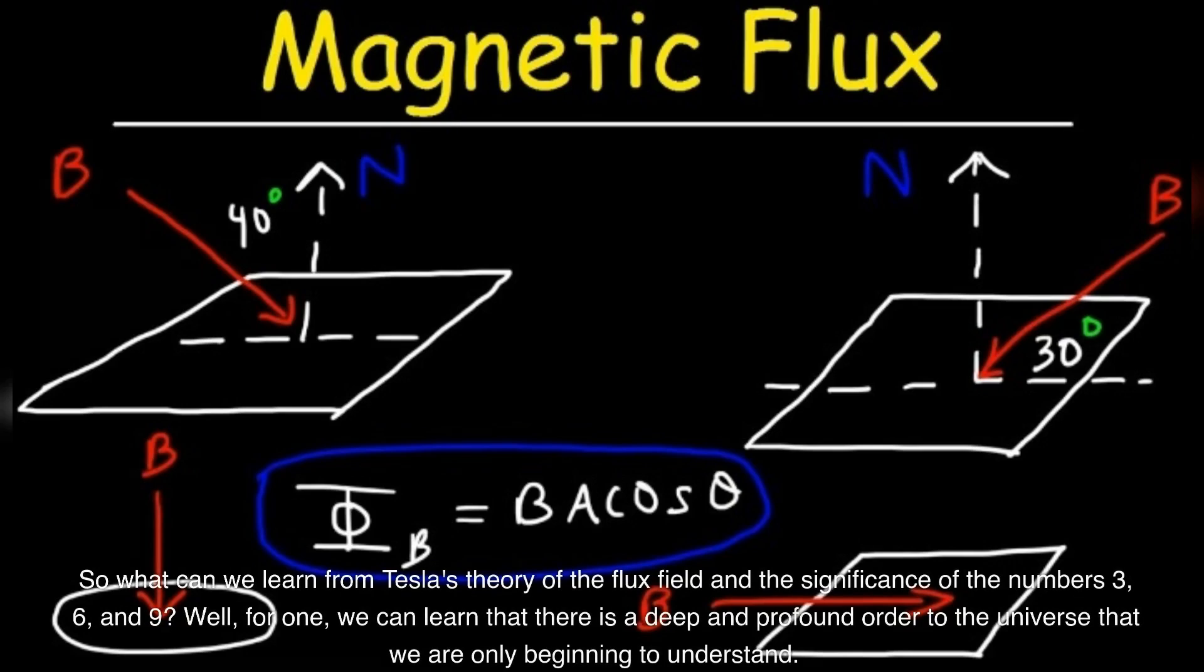So what can we learn from Tesla's theory of the flux field and the significance of the numbers 3, 6, and 9? For one, we can learn that there is a deep and profound order to the universe that we are only beginning to understand.